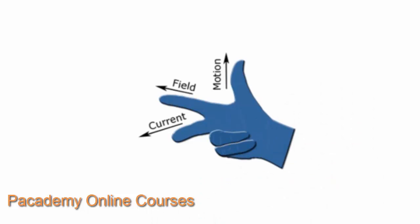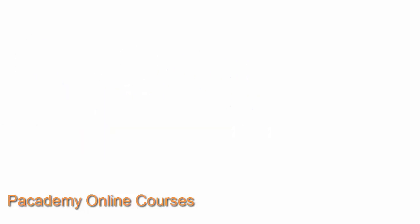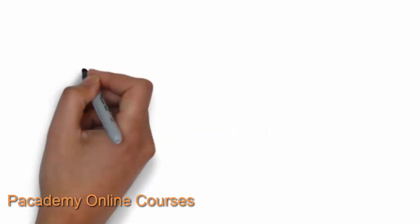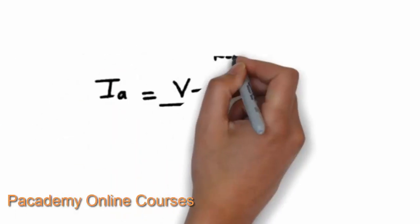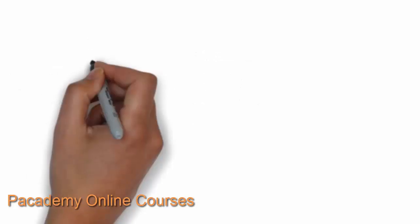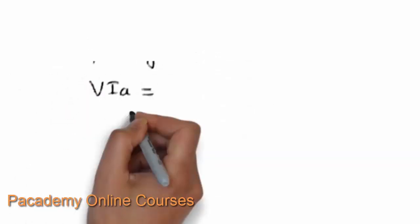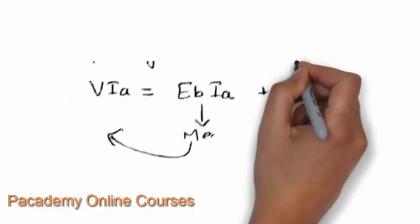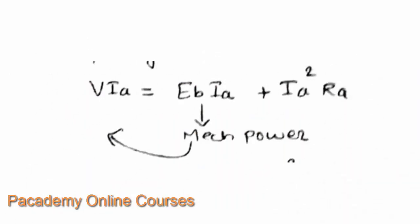Fleming's right-hand rule was used to derive the back EMF. The armature current is equal to the supply voltage minus the back EMF, divided by the armature resistance. We also derived the voltage equation: V·I_A = E_B·I_A + I_A²·R_A.